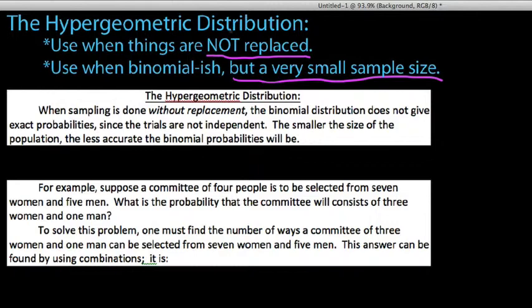So let's go ahead and define what we mean by hypergeometric distributions. Actually, let's just look at an example. It would be a good way to kind of explore this. We say, for example, suppose a committee of four people is to be selected from seven women and five men. What is the probability that the committee will consist of three women and one man? So to solve this problem, one must first find the number of ways that a committee of three women and one man can be selected from seven women and five men.